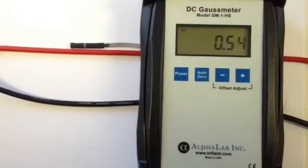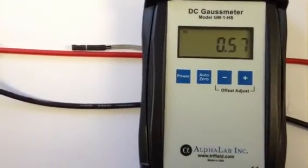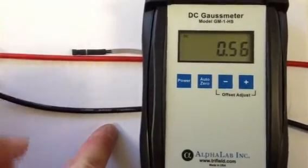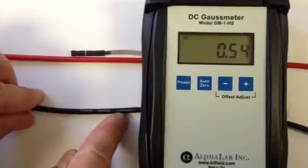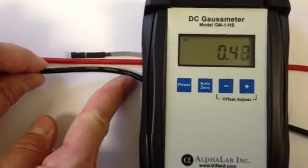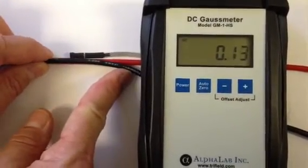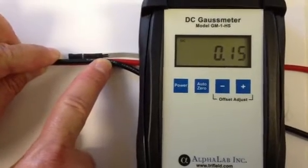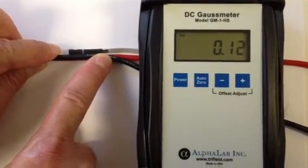And you can see it jumps up to about equal the Earth's magnetic field. Now here's what you can do in your craft to minimize magnetic interference. If I take the negative wire and put it very close to the positive wire, I can reduce that magnetic interference down very, very low.